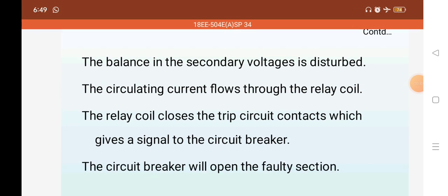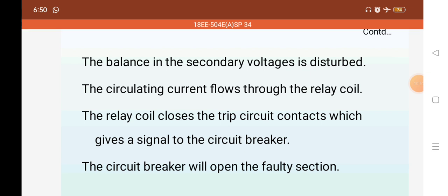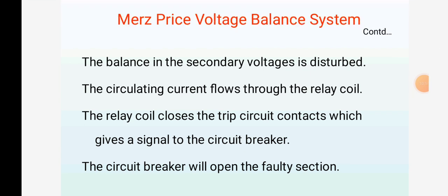The balance in the secondary voltage is disturbed. The circulating current flows through the relay coil. The relay coil closes the trip circuit contacts which gives a signal to the circuit breaker. The circuit breaker will open the faulty section.